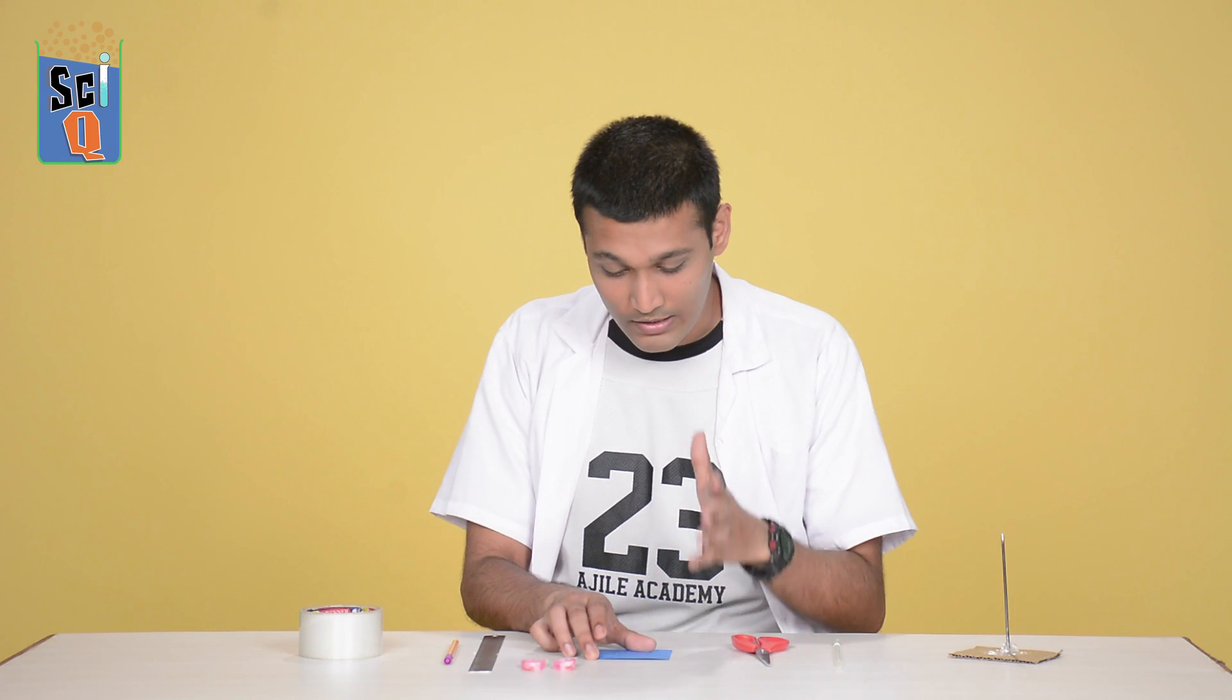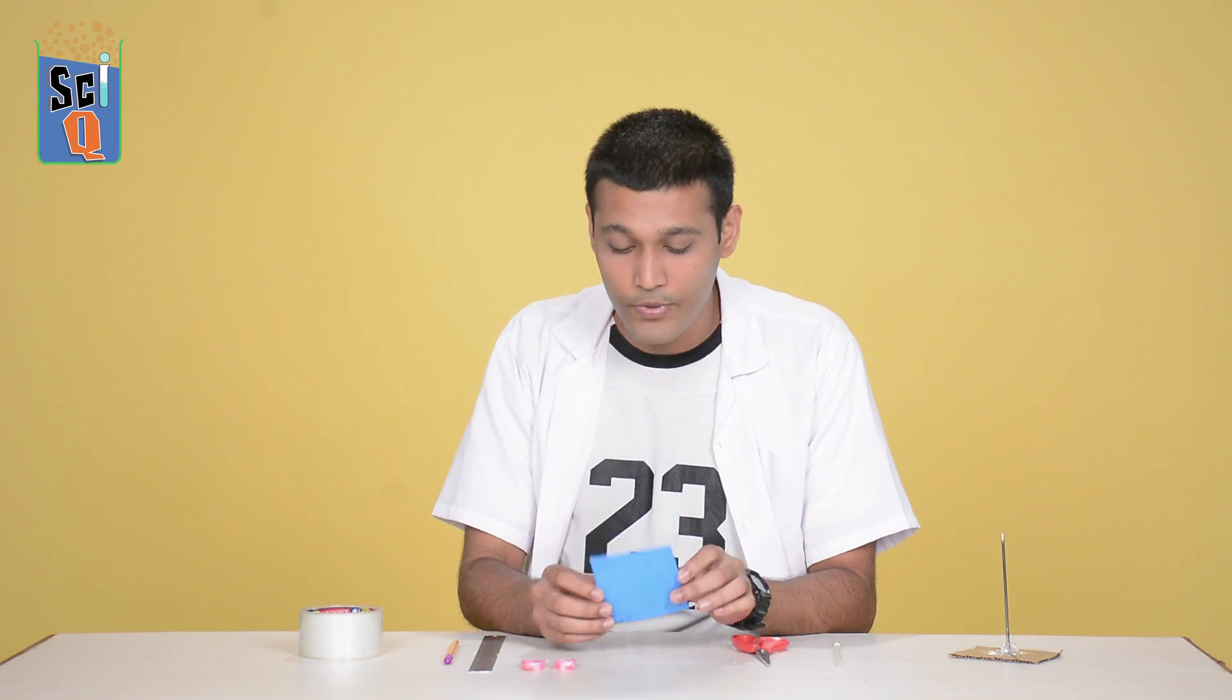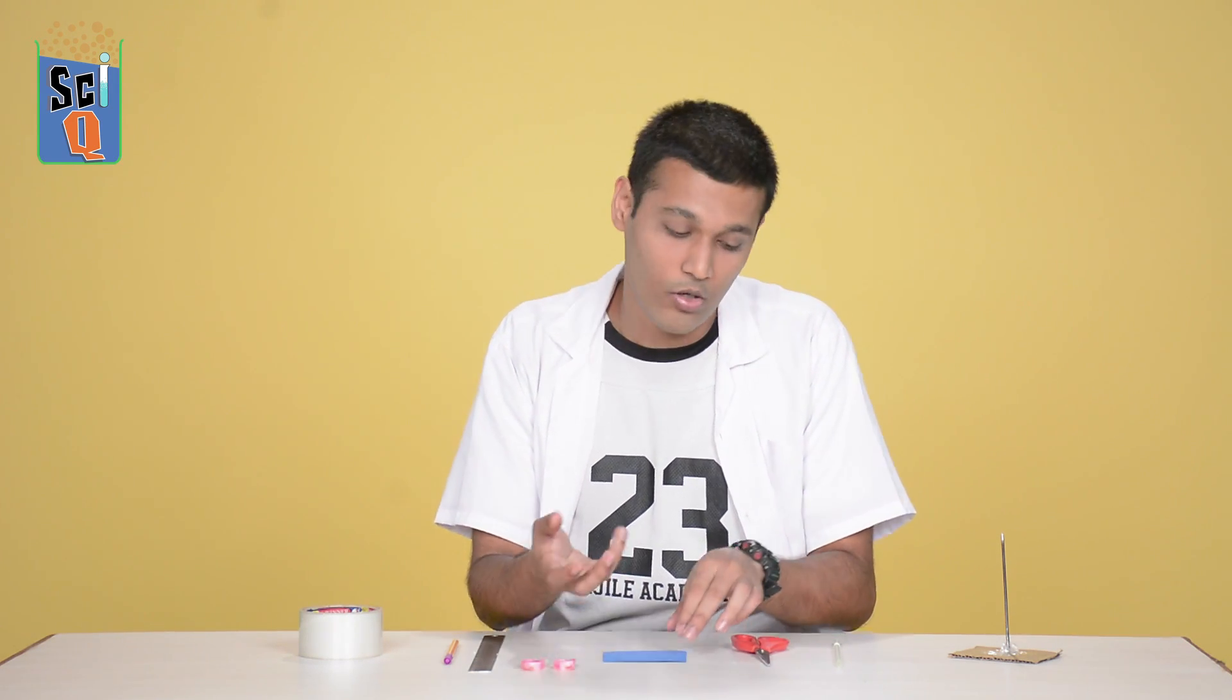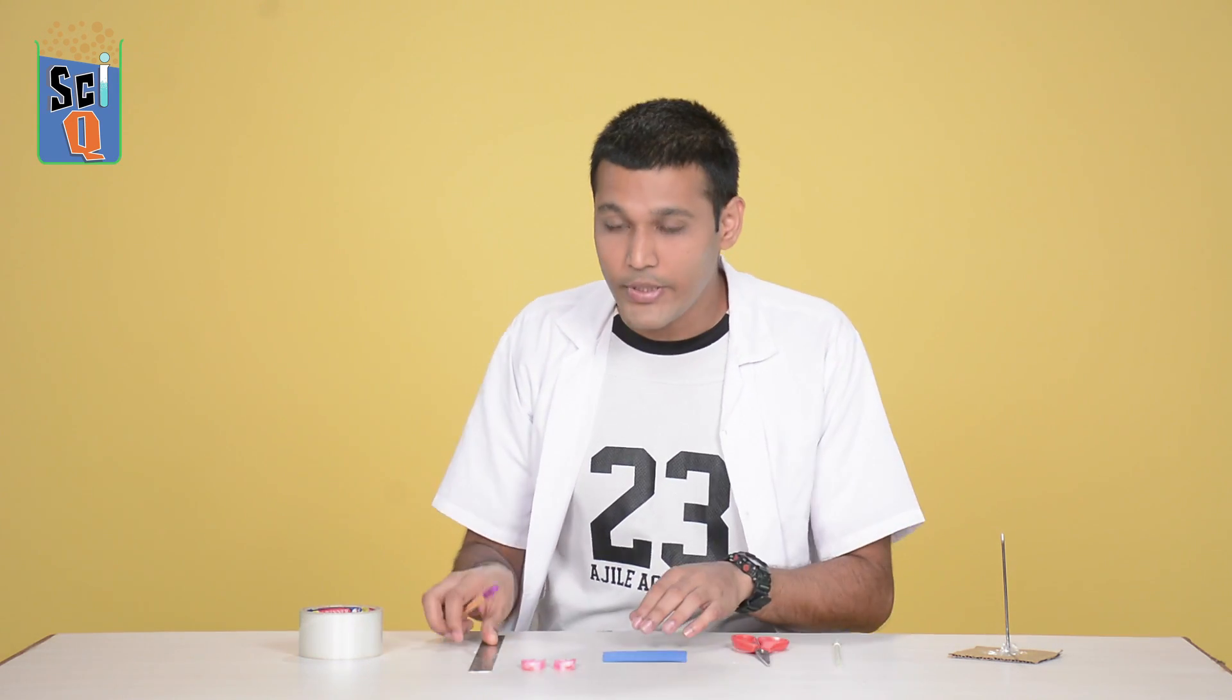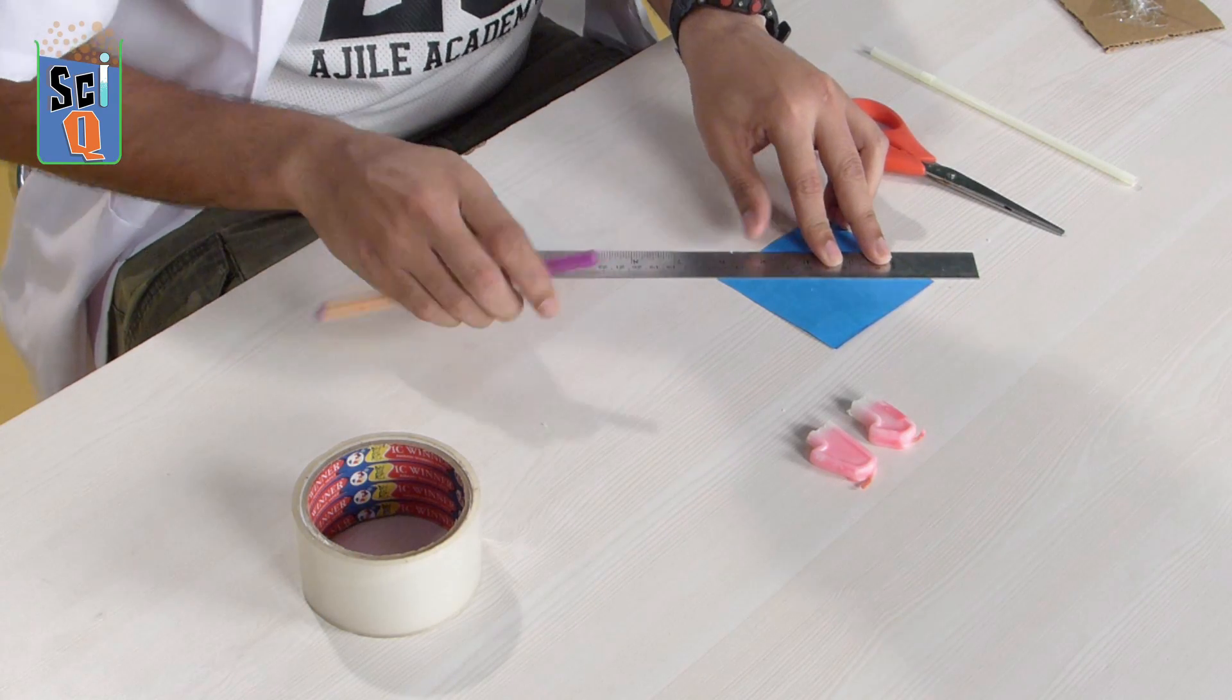Now let's make the turbine. The turbine is the part of our clean energy source device that's actually going to be doing all the work. What are we going to need? Well, we're going to need a small square piece of paper. This is ideally supposed to be made of chart paper or cardboard. What we do is we take our ruler and we draw lines from one diagonal to the other. Do this on both sides.